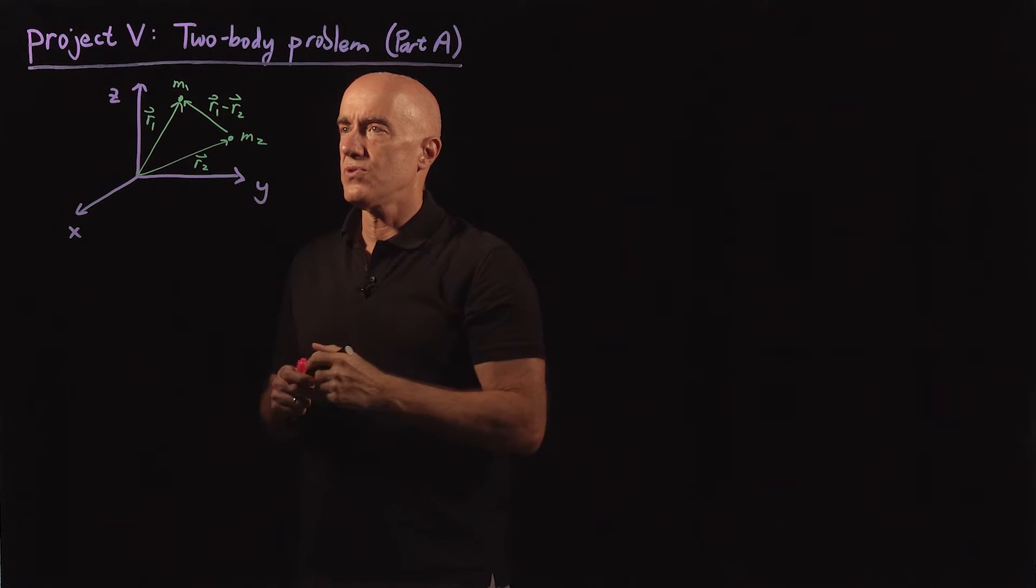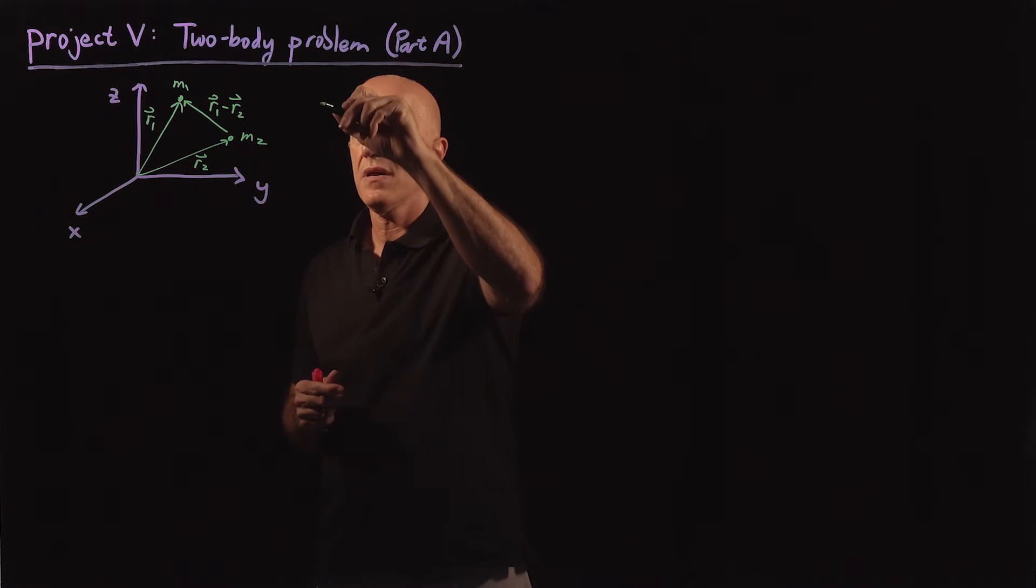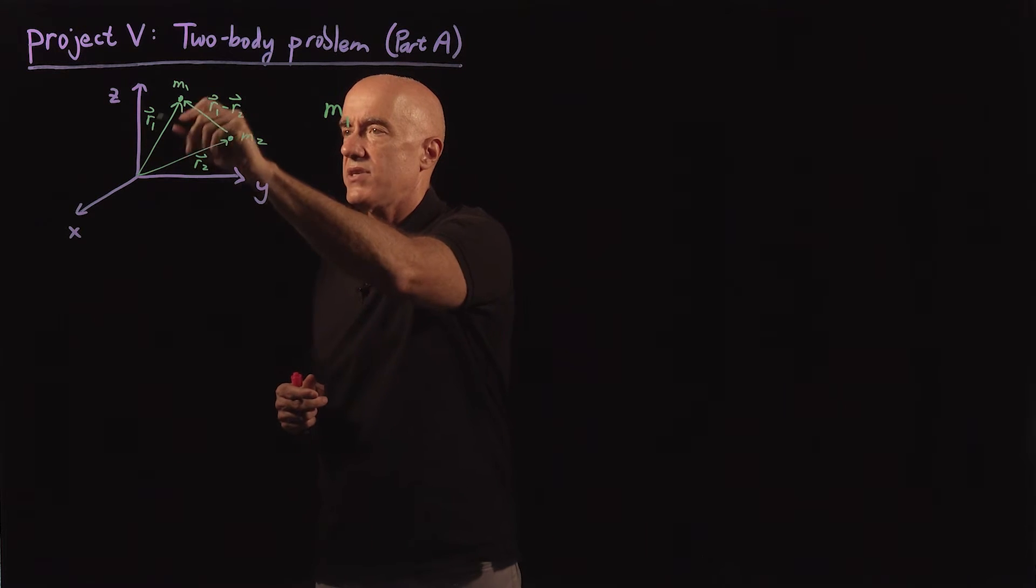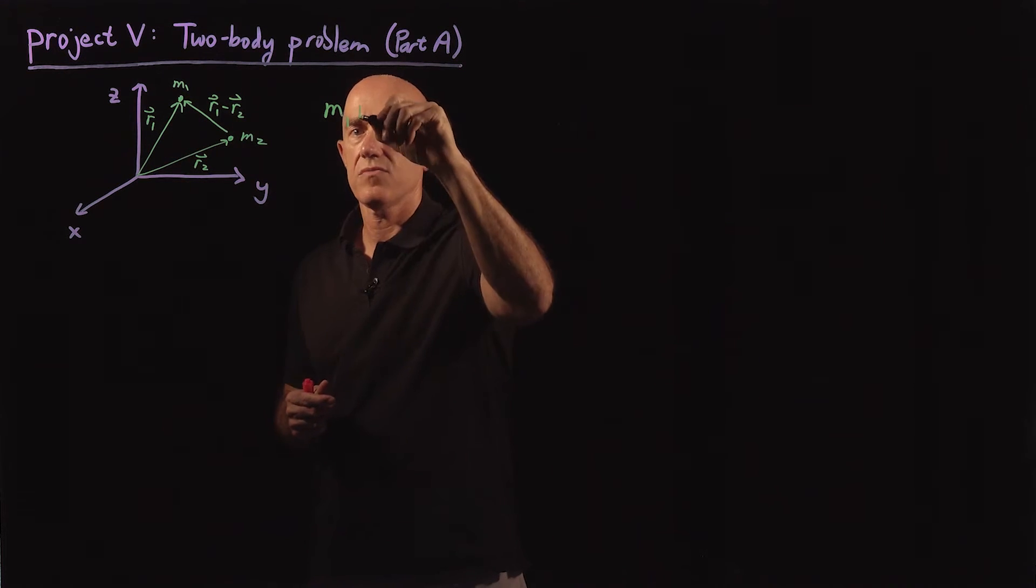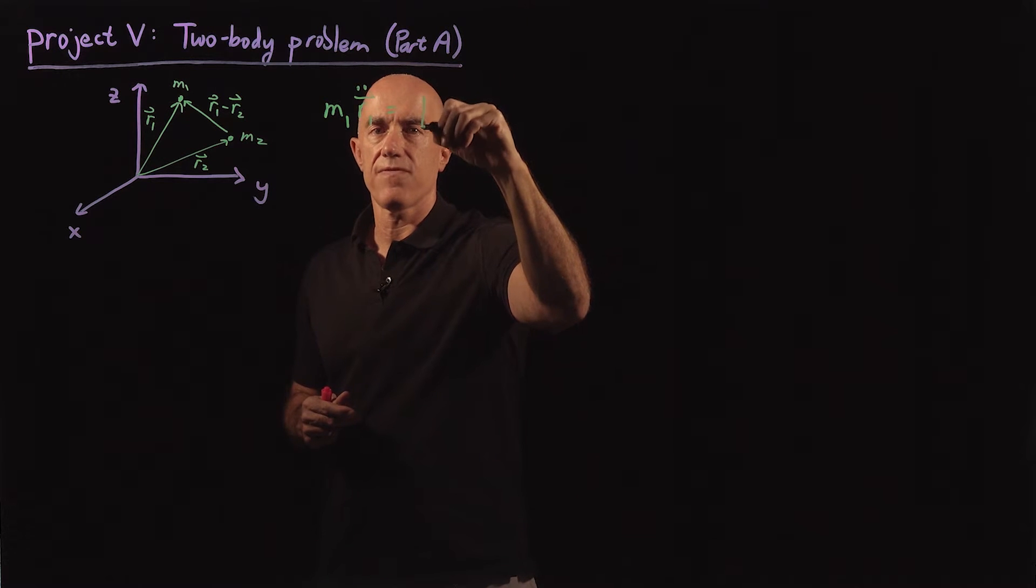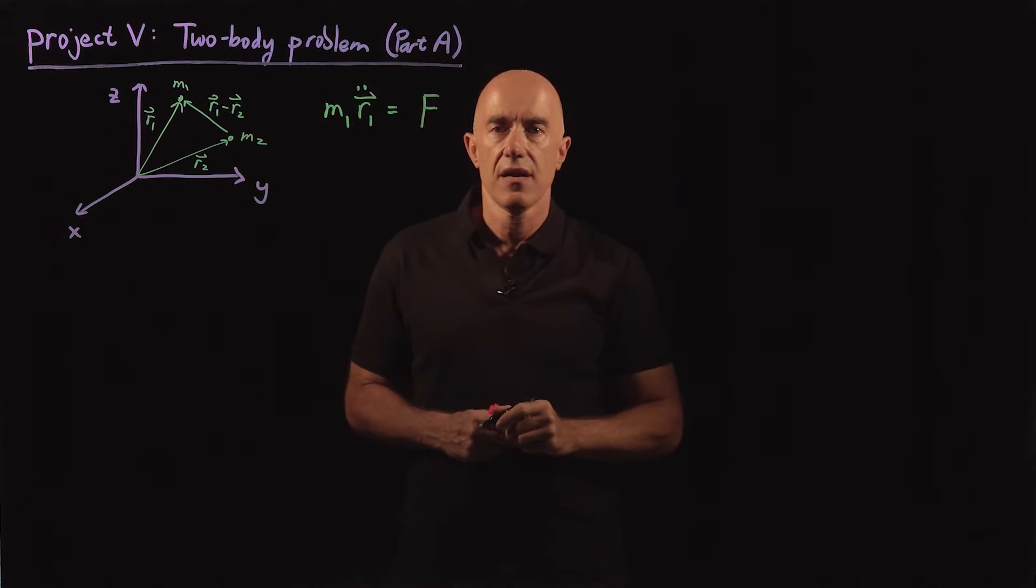If we use Newton's second law, F equals ma on this problem, we would get m1 times the acceleration of mass 1, which is r1 double dot.